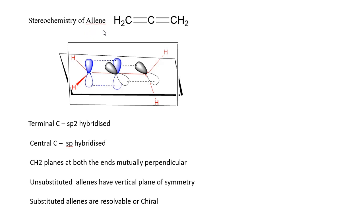Now let us discuss the stereochemistry of allene. The structure of allene is CH2 double bond C double bond CH2. Here, the central carbon atom is SP hybridized, while the terminal carbon atoms are SP2 hybridized. The central carbon atom uses its two SP hybridized orbitals for making sigma bonds with the terminal carbon atoms. This central carbon atom has two unhybridized p orbitals, indicated in blue and black, which lie in mutually perpendicular planes.